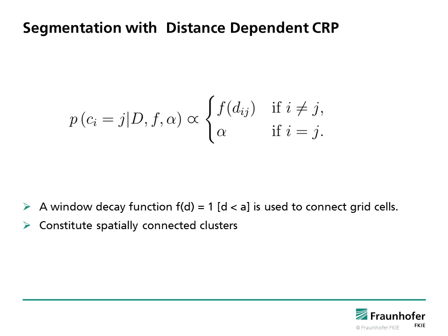Grid cells i and j sit together with a probability proportional to a window decay function f. Or grid cell i can sit alone with a probability proportional to a scaling parameter alpha. This function enforces the algorithm to generate contiguously connected clusters in a segmentation blob.